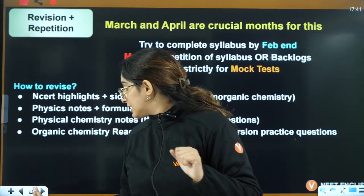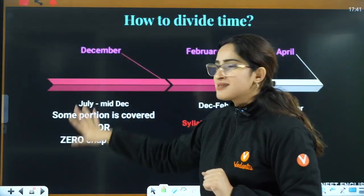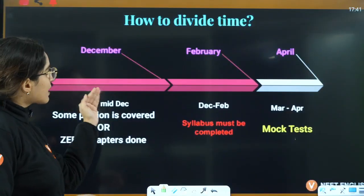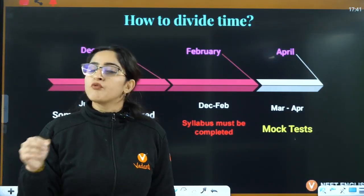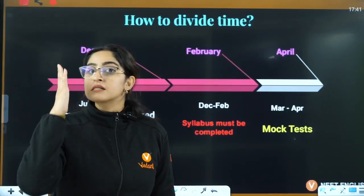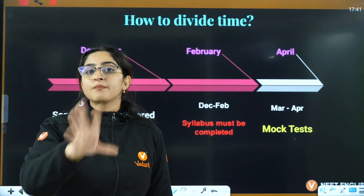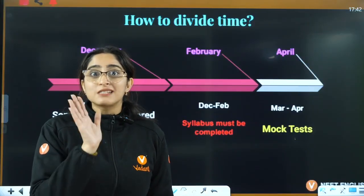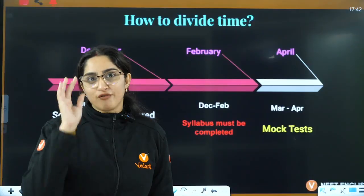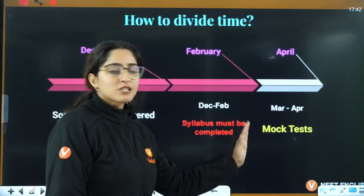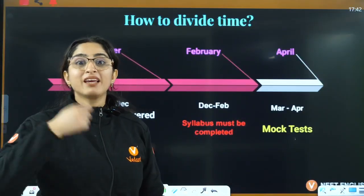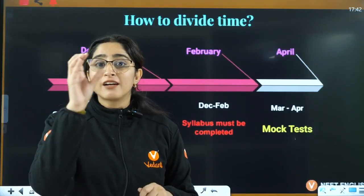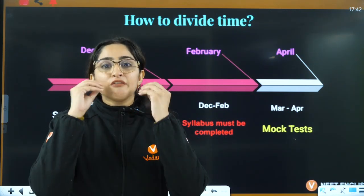The proper timeline is: December through February, full focus is syllabus completion. That is your deadline — by February your syllabus should be completed. You still have about 80 days for syllabus completion. Once you complete your syllabus by February, March becomes the time for test analysis and revision — and that is what gets you that dream medical seat.